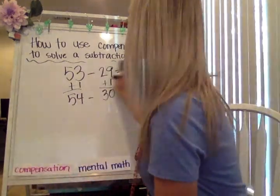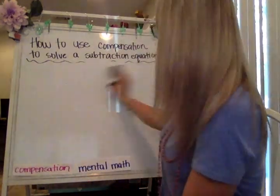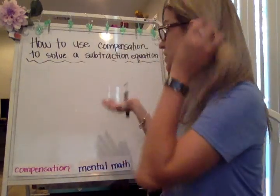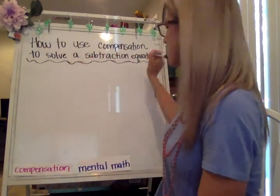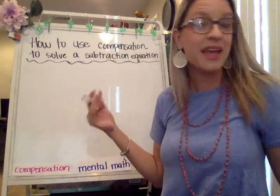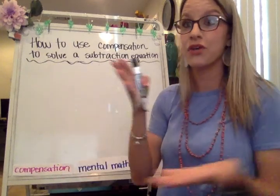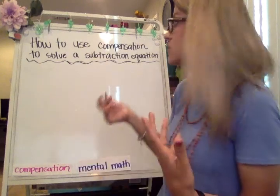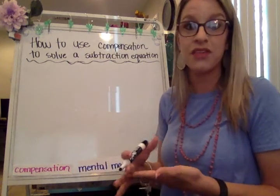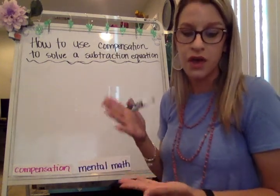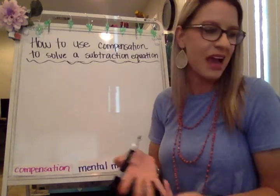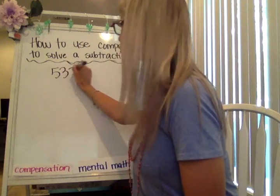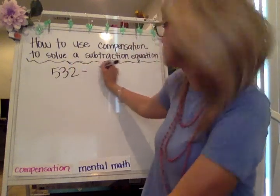When it comes to using compensation to solve equations with more than two digits, three-digit numbers with compensation get a little trickier because you could have regrouping from the ones place and regrouping from the tens place. We'll start with an example where regrouping is only in the ones place, and then we'll do another example where you have regrouping in both the tens and the ones place.